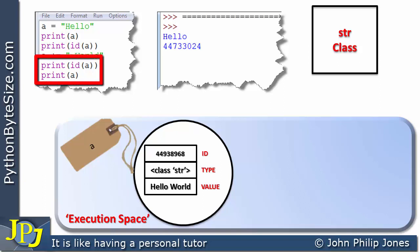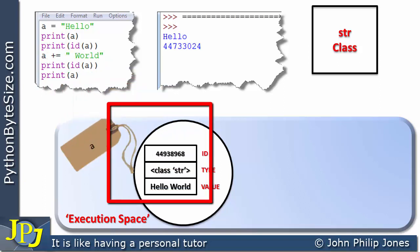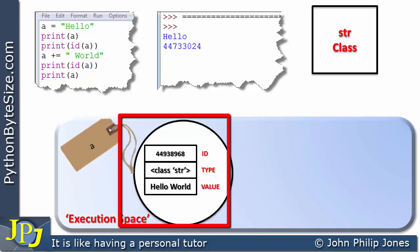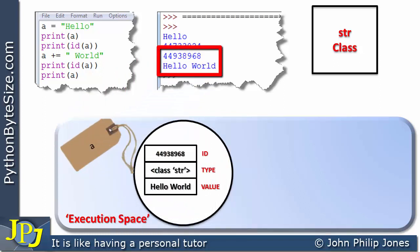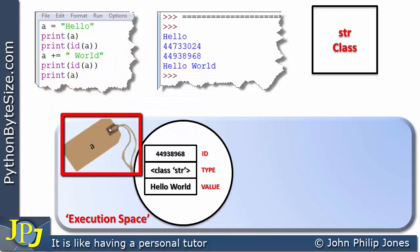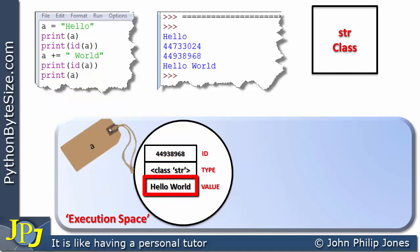Of course, we come to these two statements, and what these are going to do now is refer to this new object which has got the label A. So the output from the program will be as you can see here. You print the ID of A, you locate the label, this is the ID that gets printed here. You print A, you locate the label, this is the value, so hello world gets printed to the screen as you can see here.